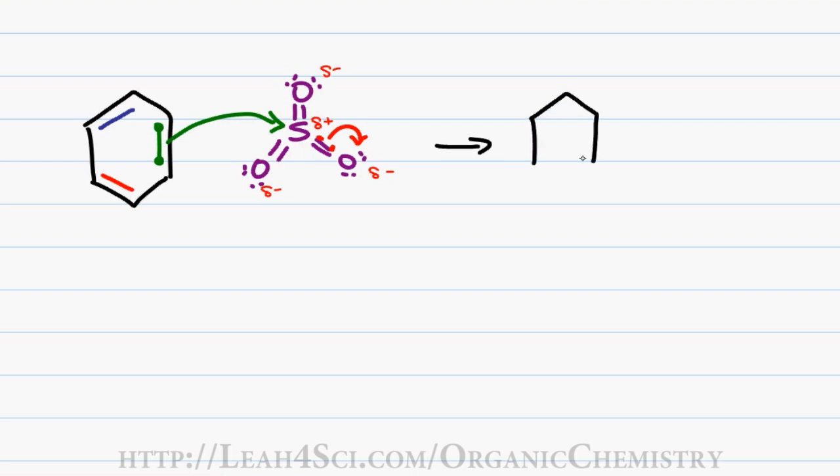The resulting sigma complex is no longer aromatic and has a sulfur bound to carbon, double bound to two oxygen atoms and single bound to one negative oxygen atom. We also have a hydrogen attached where the sulfur is attached, making this carbon sp3 hybridized, and finally we also have a positive charge at the neighboring carbon atom where the pi bond broke away.